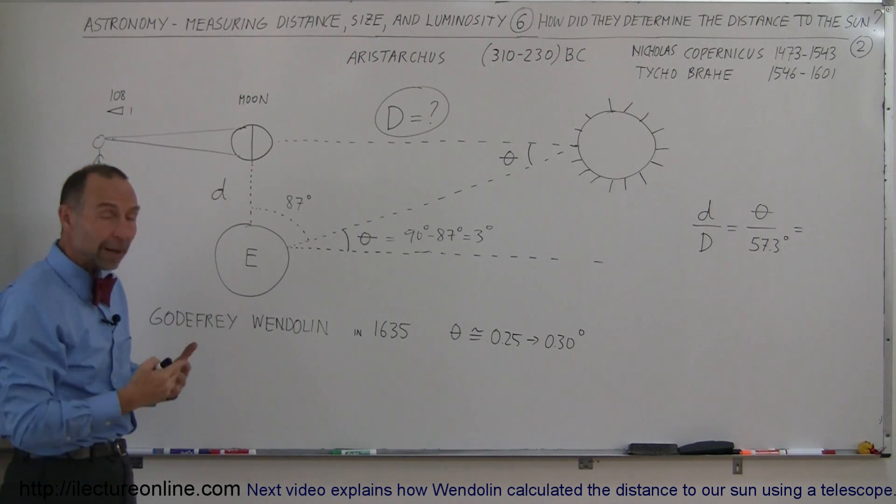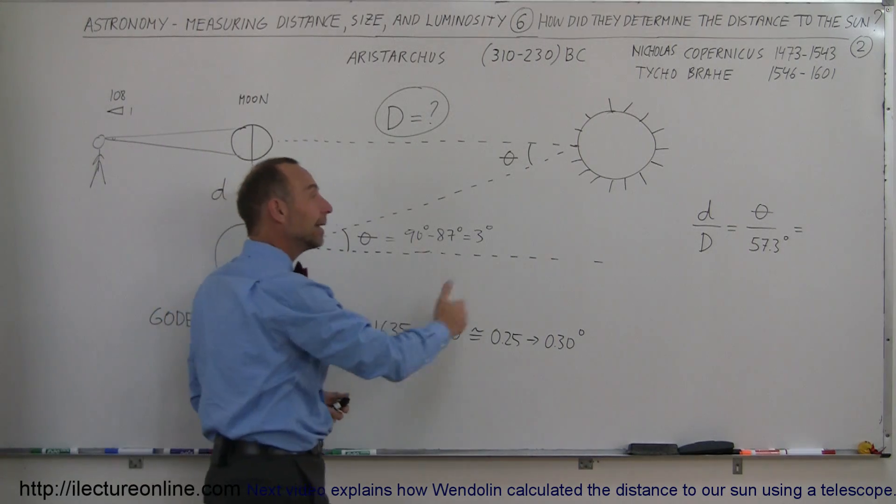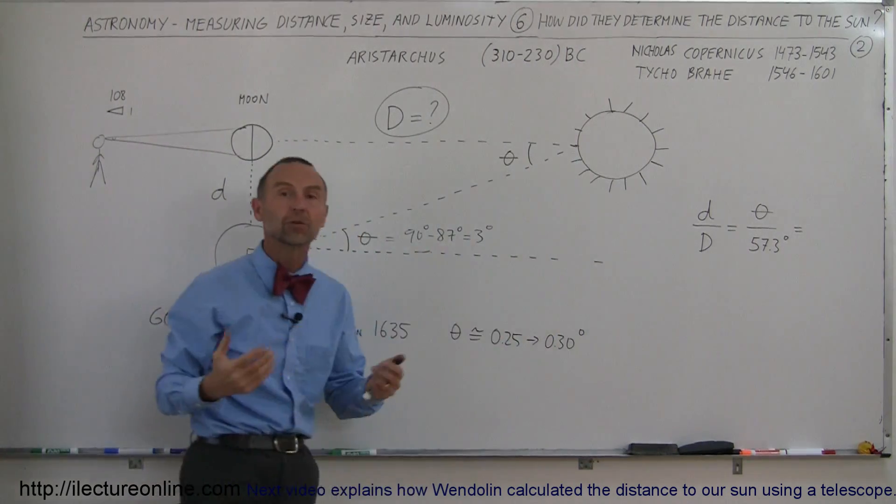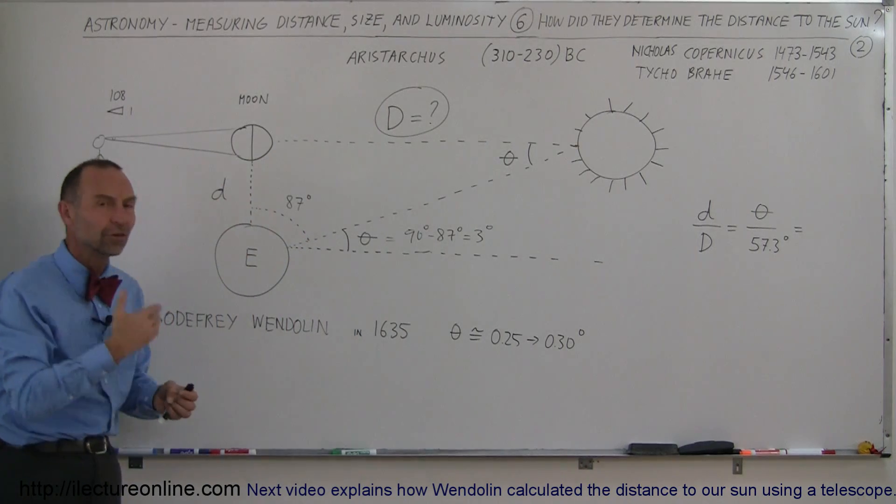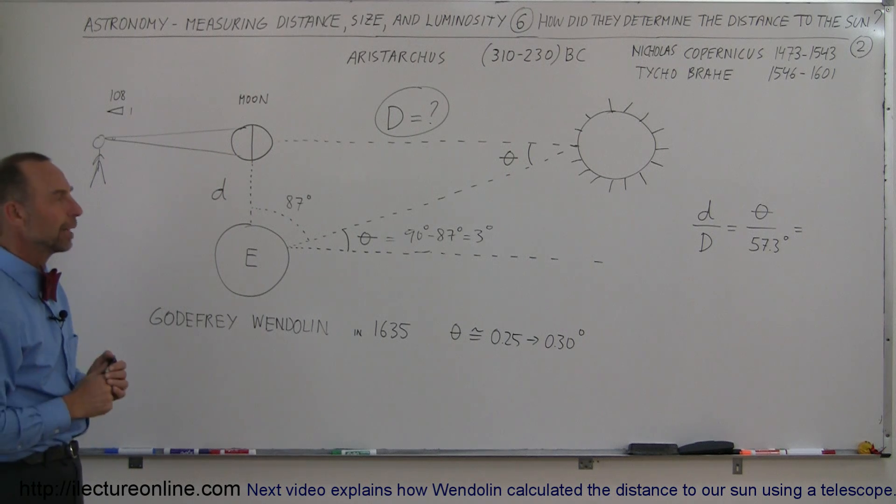They also tried to make this very same measurement. And guess what? They came up with about the same results. So almost 2,000 years later, they tried this again and again. They had a ratio of about 1 in 20, thinking that the distance to the sun was about 20 times the distance to the moon. So they were off also by a factor of 20.